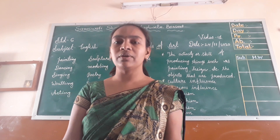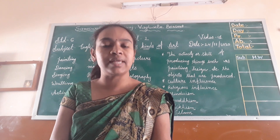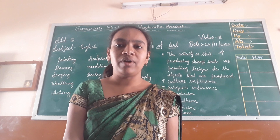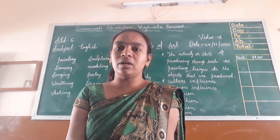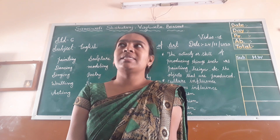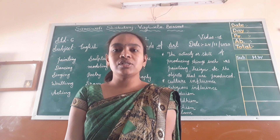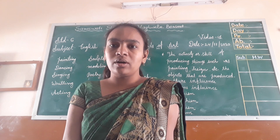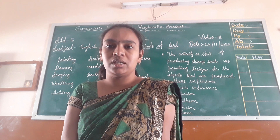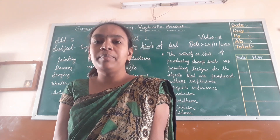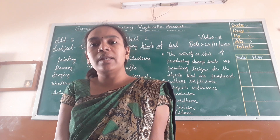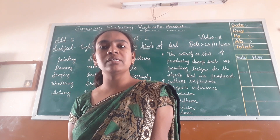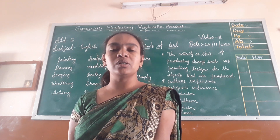Understood? So, whatever we learned about Vincent van Gogh in the second activity: the name of this particular painter is Vincent van Gogh, he is from the Netherlands which is in Europe. More than 900 paintings were drawn by him in his whole life. He sold only one painting in his whole life. Nowadays, Vincent van Gogh is famous for his paintings.